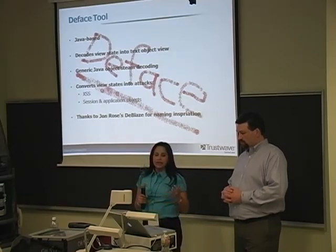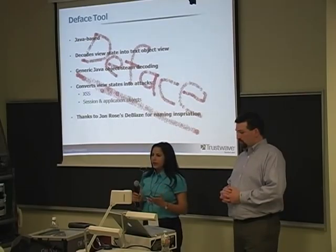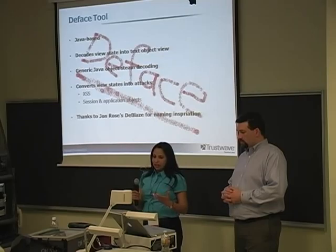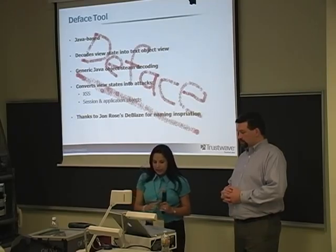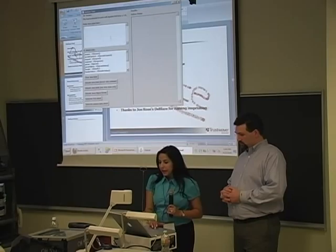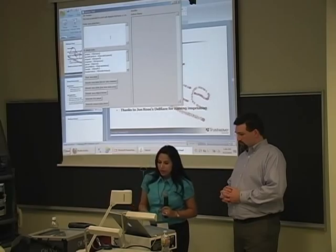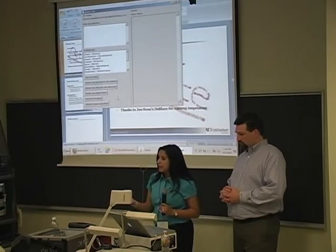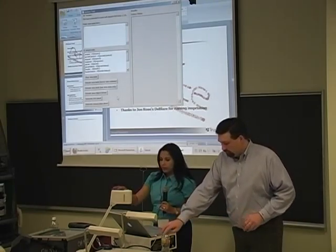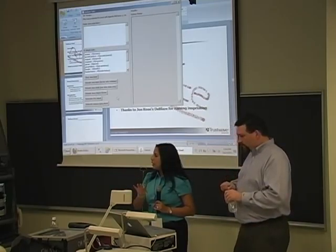When we first ran into this issue, we started creating a tool to aid in crafting an attack against a Java Server Faces application. We created a Java-based application called the DPhase tool. It can take an unencrypted Java Server Faces view state, decode it into a text object, and generate a couple of attacks: a cross-site scripting attack via an onmouseover event on appropriate elements, and a session data attack using Expression Language implicit objects.